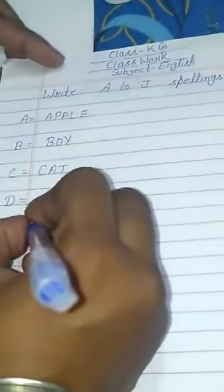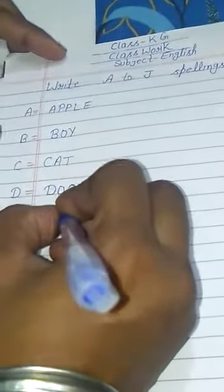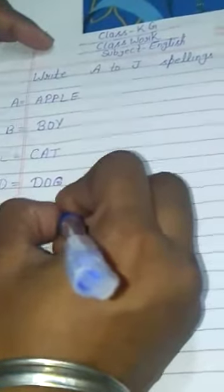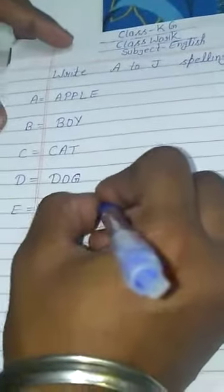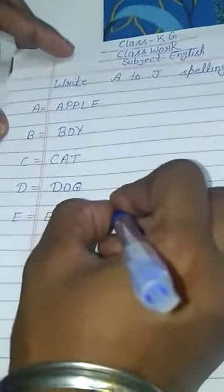E equal E, L, E, P, H, A, N, T. Elephant, elephant means hati.